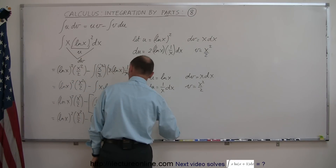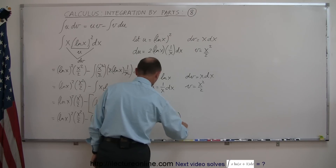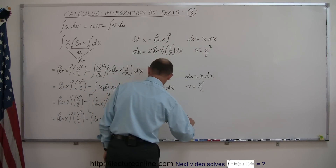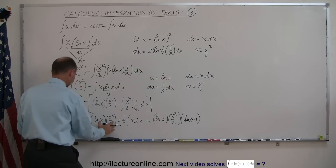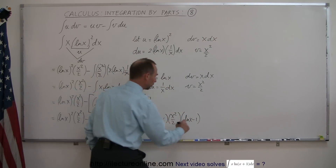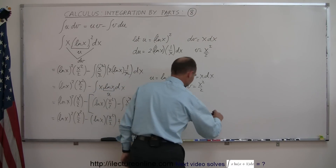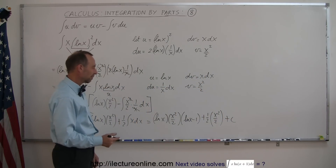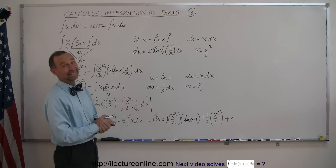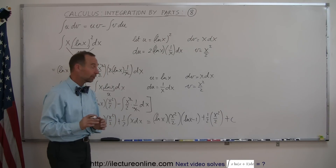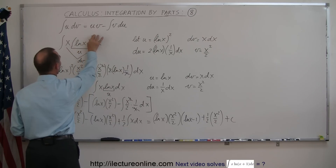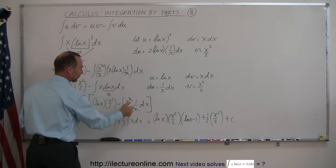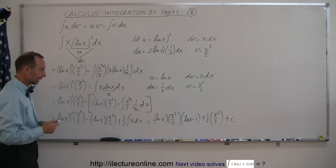We can factor out x squared over 2 from the first two terms — I'm left with a natural log of x and a minus 1, so that would be times the quantity natural log of x minus 1. Then integrating the remaining term gives plus 1 half times x squared over 2, plus a constant of integration. The real key here is that we had a natural log of x squared, and we needed to use integration by parts twice to get rid of it. The first time we got it down to a single natural log of x; the second time the natural log of x was gone, and we integrated everything else — and that's how you do this one.